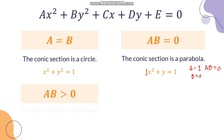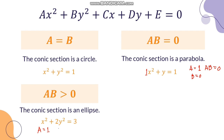If A times B is greater than 0, then the conic section is an ellipse. For example, X squared plus 2Y squared equals 3. The coefficient of X squared is 1, so A equals 1. The coefficient of Y squared is 2, so B equals 2. Multiplying these gives AB equals 2, which is greater than 0. For an ellipse, X squared and Y squared both appear with addition, so both coefficients are positive.